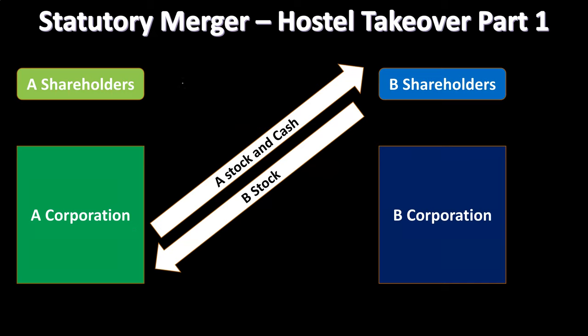In a statutory merger via hostile takeover, you have the same setup: A shareholders own A, B shareholders own B. But instead of A's management going to B's management for negotiation, A's management goes directly to the owners. In a truly hostile takeover, they try to buy out shares and reach 51% before anyone is aware, gaining a controlling interest — essentially bypassing the management-to-management negotiation and going directly to the ownership interests.